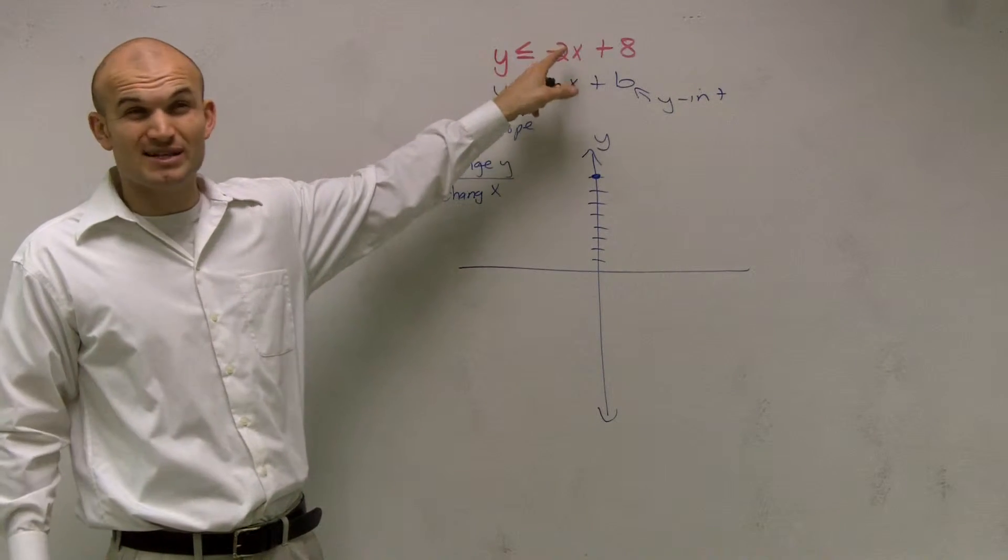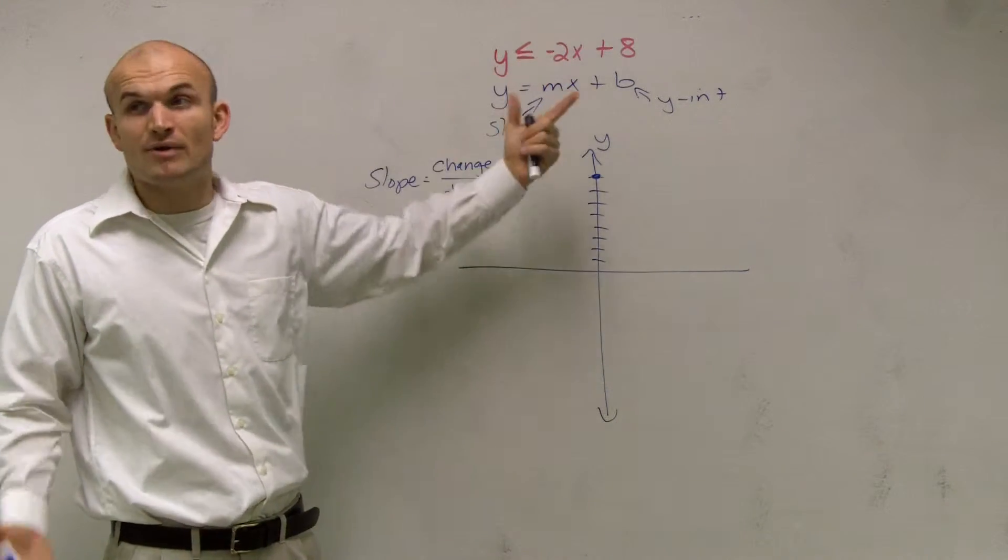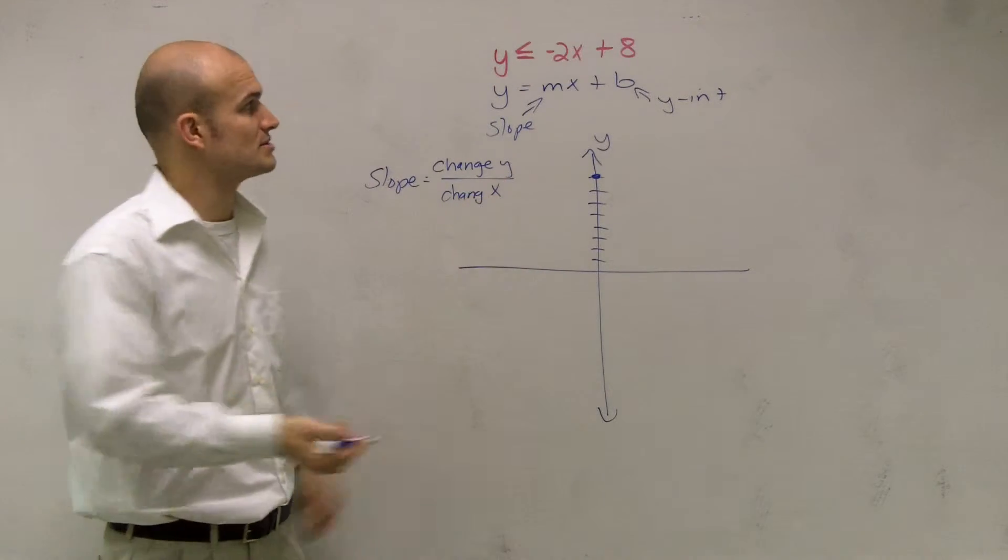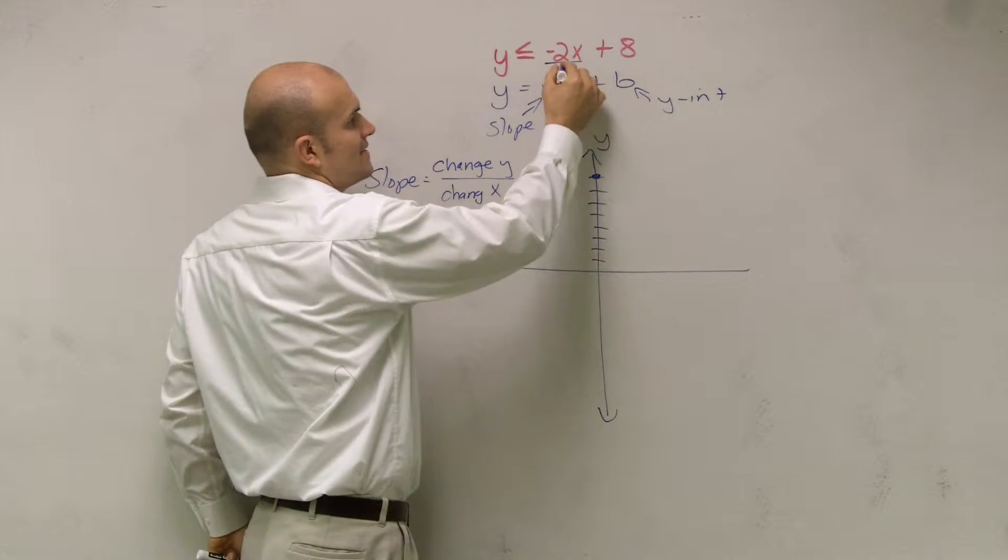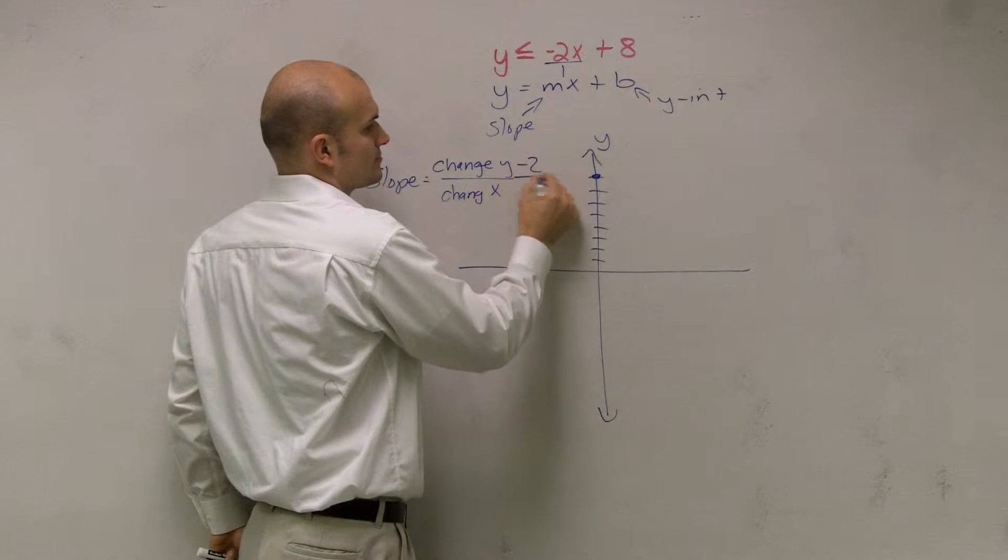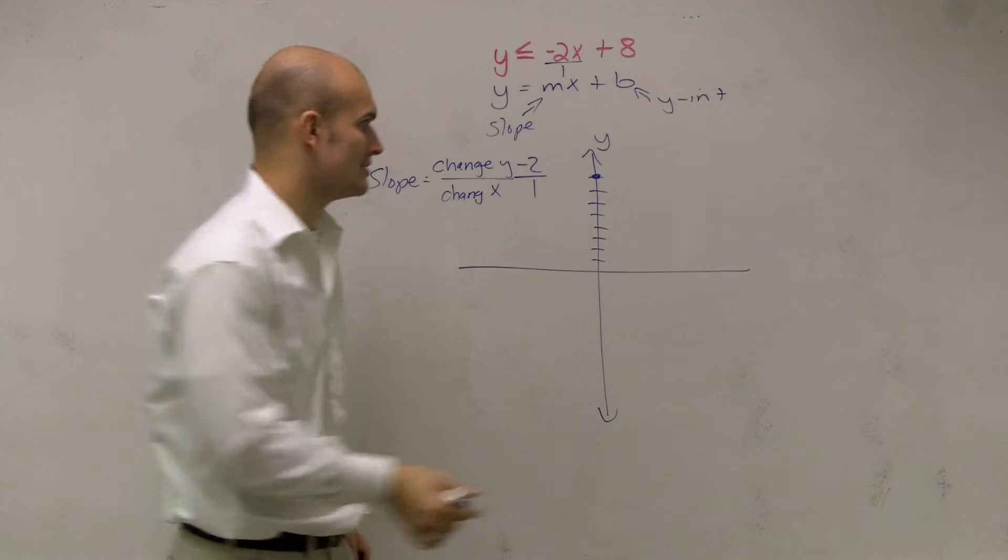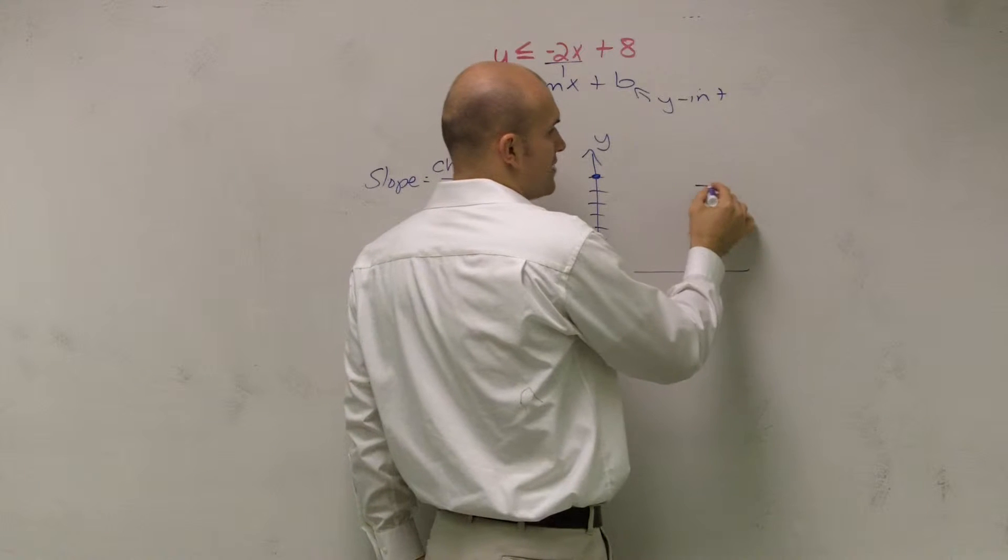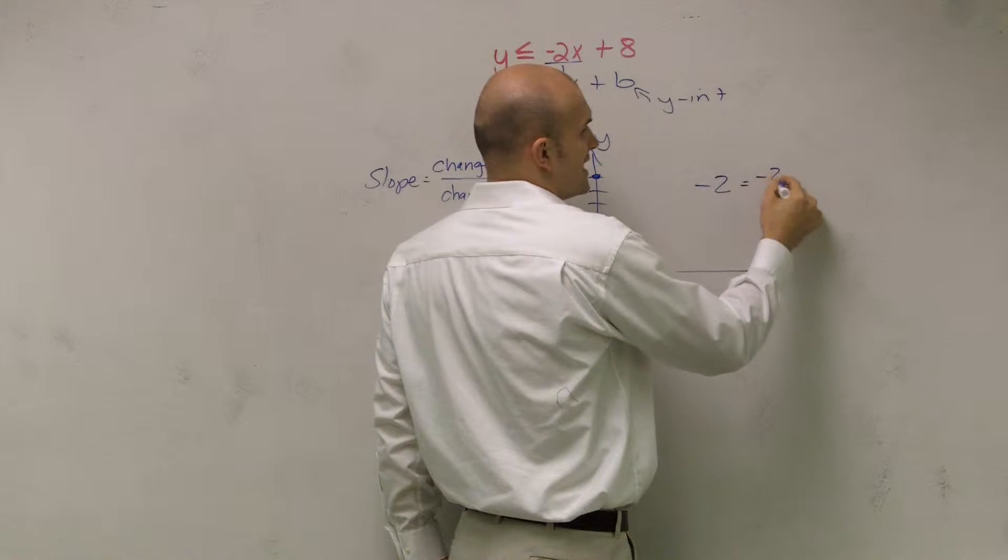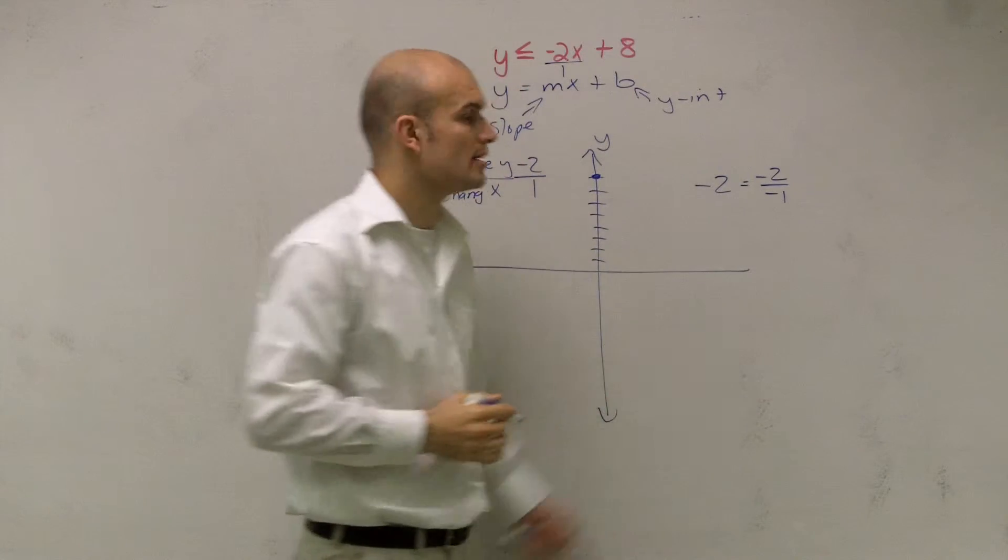Here we just have one number, negative 2. We want to write it as a ratio between two numbers, so I can rewrite this as negative 2 over 1. Now I'm going to talk about something here. A lot of students get mistaken when they see negative 2 and think that's going to be negative 2 over negative 1.